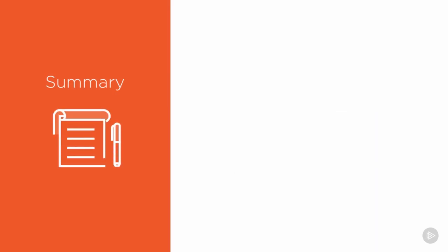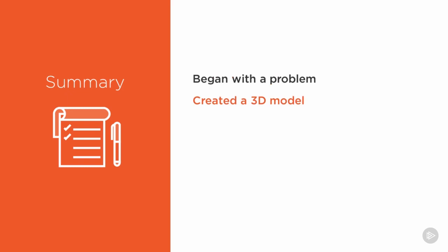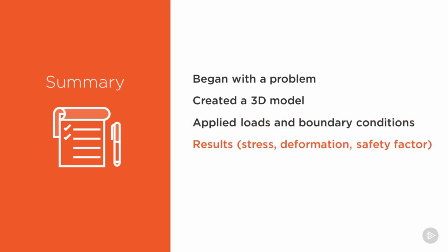That's as far as we'll go into parametric modeling in ANSYS — there are many other great features, but we'll leave those for another course. To conclude: we started with a real-world problem, designing a lifting lug to meet minimum safety factor requirements while saving on material cost. We defined the physical elements, created the 3D model in Design Modeler, applied loading and boundary conditions, ran the ANSYS solver, and explored stress, deformation, and safety factor results. Finally, we used the parametric optimization tools to save on material cost while keeping a high safety factor. With all the tools and concepts covered in this course, you are now ready to tackle your own engineering problems and create great solutions using ANSYS. Thanks for watching.